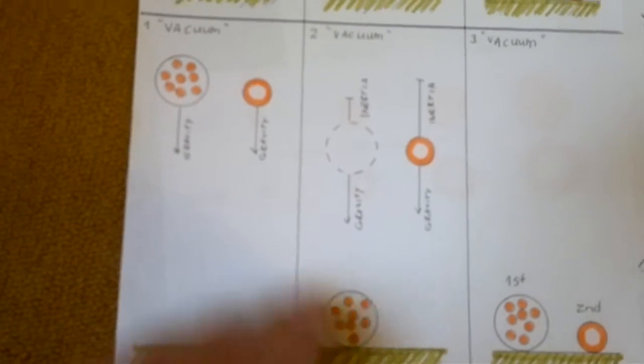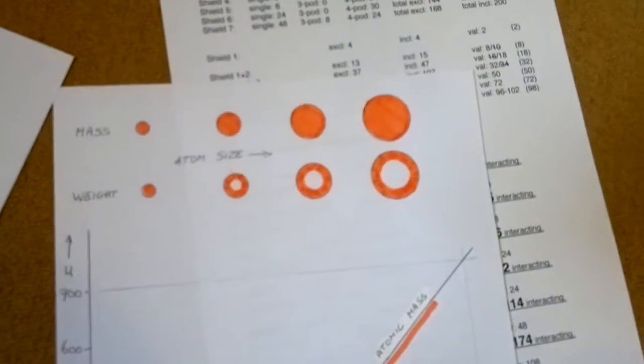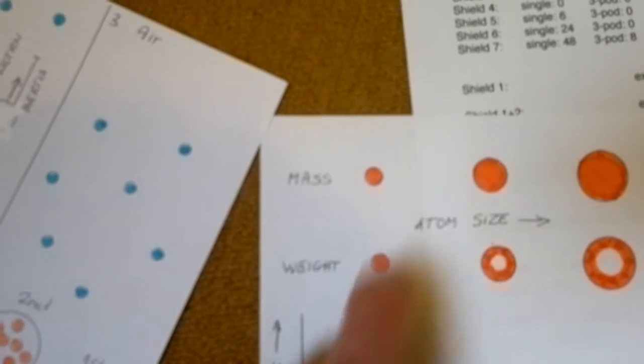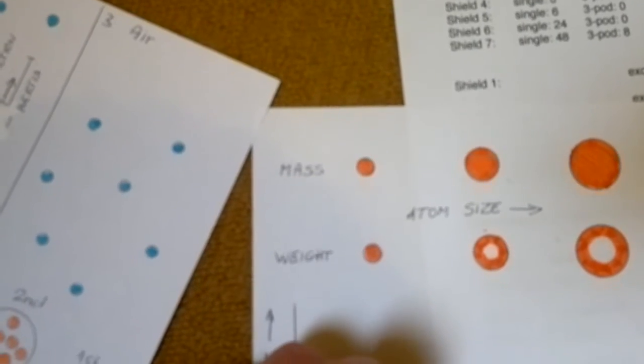And gravitons can easily go in between those molecules, in between those atoms. There's no problem. So this will react. Your feather will react like this. Mass and weight the same. Inertia, inertia and weight about the same.